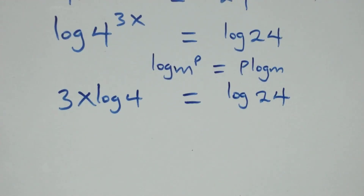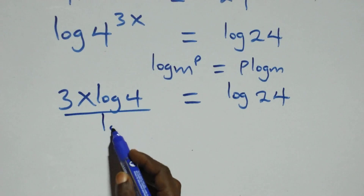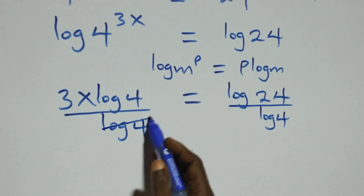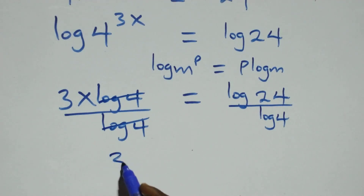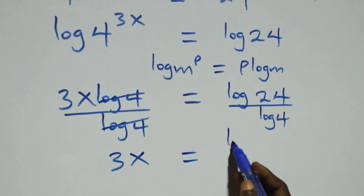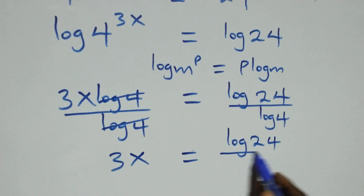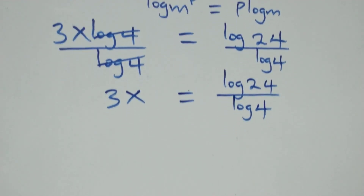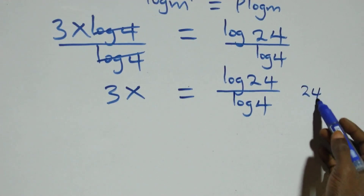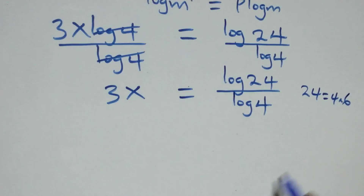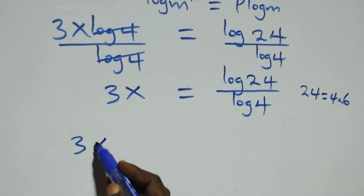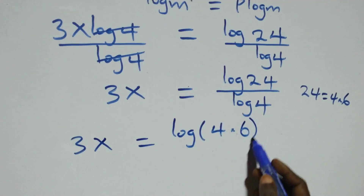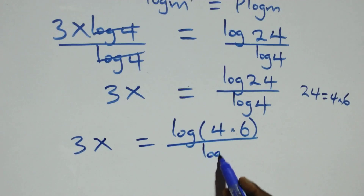The next step: we divide both sides by log 4. We divide this side by log 4 and also divide the other side by log 4, which means log 4 cancels. We have 3x equals log 24 over log 4. Then we can express 24 as 4 times 6.